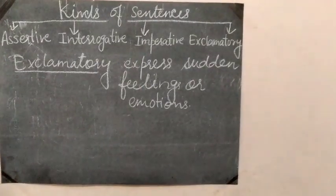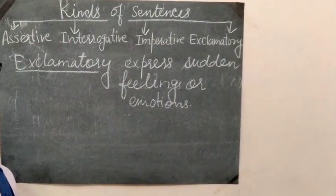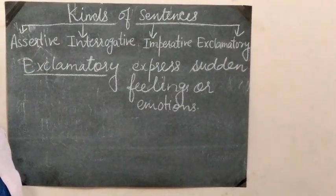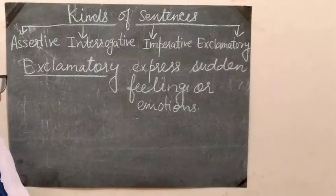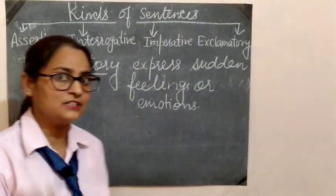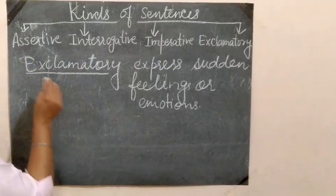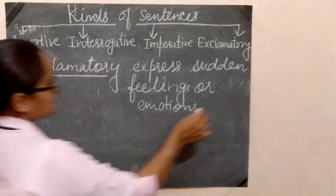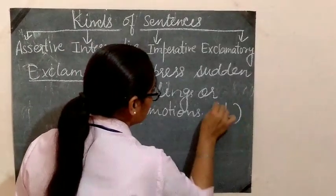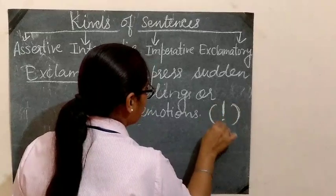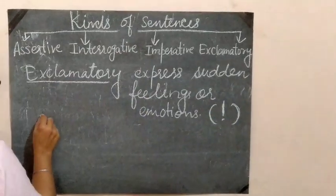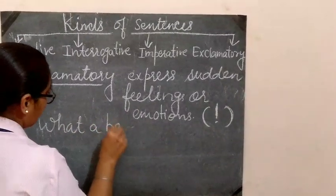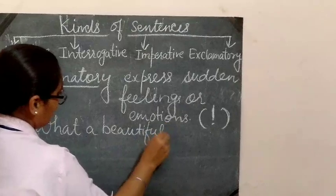For example, if you went to the market and suddenly saw a very beautiful dress, you would say 'Wow, what a beautiful dress!' — that is your sudden feeling. So exclamatory sentences are always followed by an exclamation mark. Example one: 'What a beautiful dress!' Example two: 'Wow, what a beautiful rainbow!'